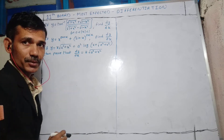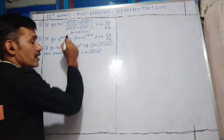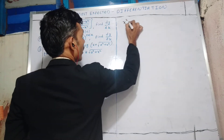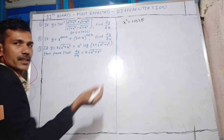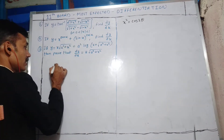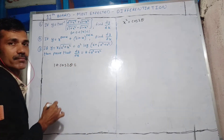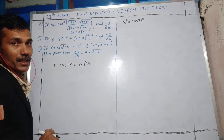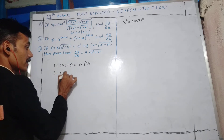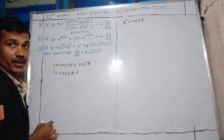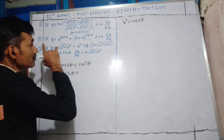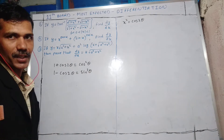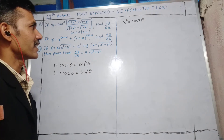Here we can do some substitution. We write x² = cos2θ. Why? Because 1 + cos2θ = 2cos²θ, so the square and square root cancel giving cosθ. Similarly, 1 - cos2θ = 2sin²θ, so square and square root cancel giving sinθ.